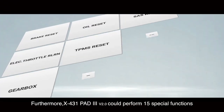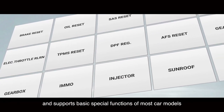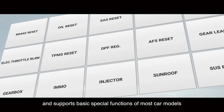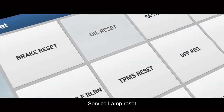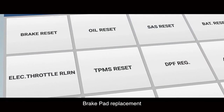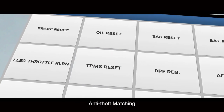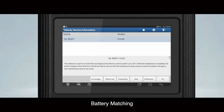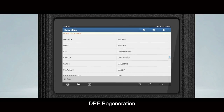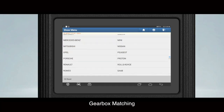The X431 PAD III can perform 15 special functions and supports basic special functions for most car models, including: service lens reset, throttle matching, steering angle reset, brake pad replacement, tire pressure reset, anti-theft matching, ABS bleeding, battery matching, tooth learning, injector coding, DPF regeneration, sunroof initialization, headlamp matching, suspension matching, and gearbox matching.